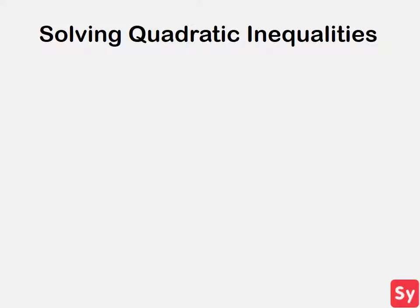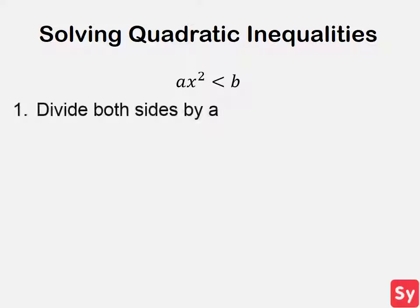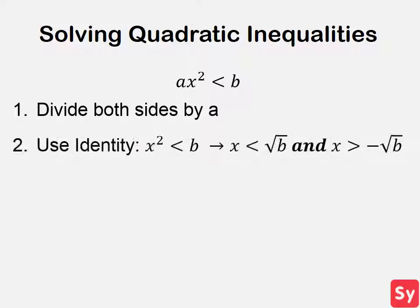For two cases, we do not follow the steps mentioned before. The first case is when you have a quadratic inequality in this form. To solve it, first divide both sides by a, then use this identity to solve the quadratic inequality.